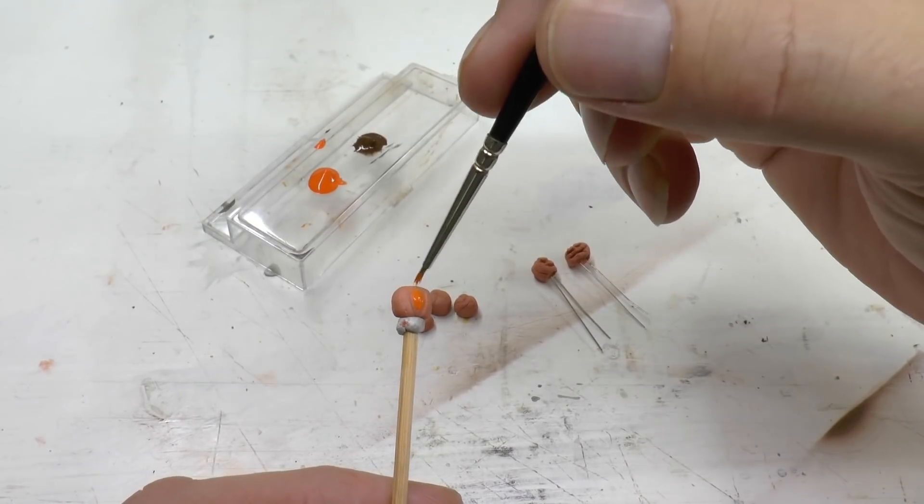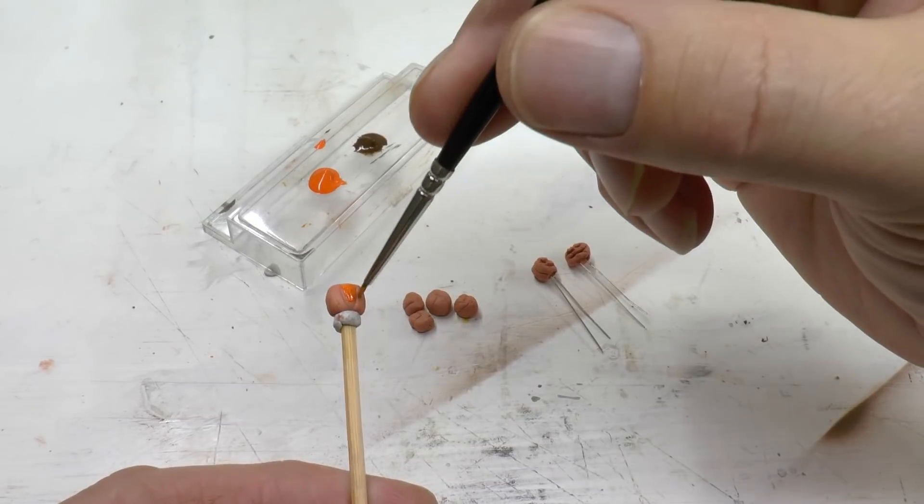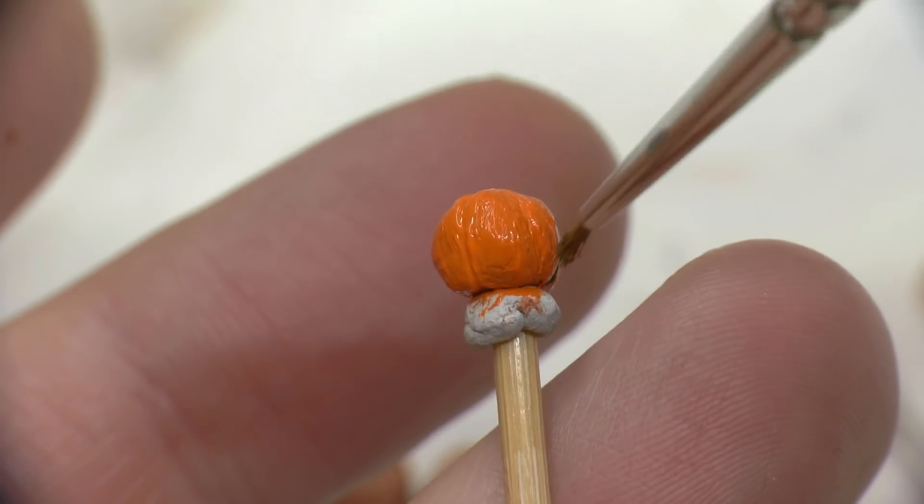I use a round soft brush in the size 00 to paint the acrylic paint.